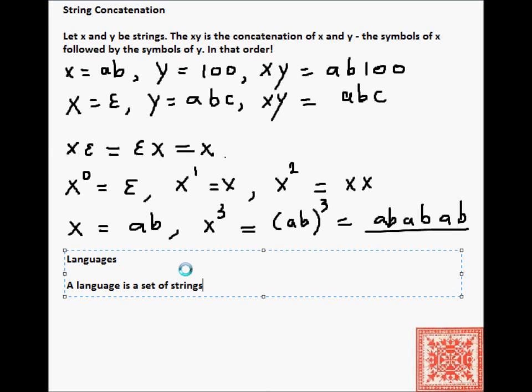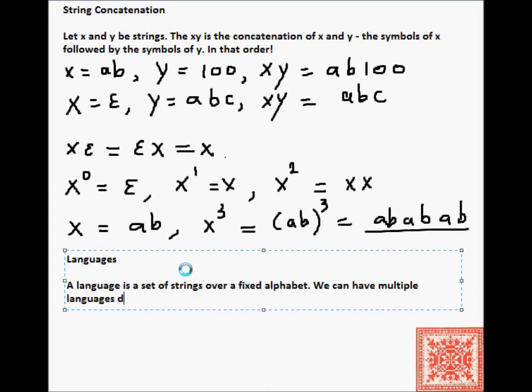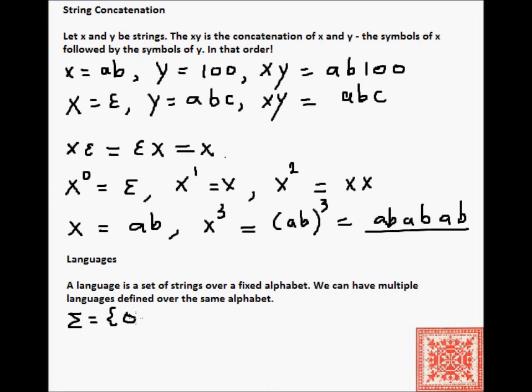Once we have strings, we can define languages. A language, formally speaking, is a set of strings over some specific fixed alphabet. Another thing to observe is that it is possible to have multiple languages defined over the same alphabet. For example, there are multiple languages defined over the Latin alphabet. There are multiple languages defined over the Cyrillic alphabet: Russian, Ukrainian, Belarusian, Bulgarian, Serbian, and so forth.